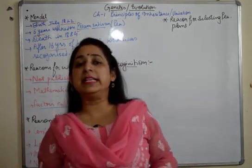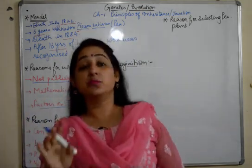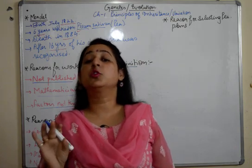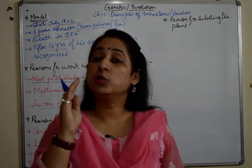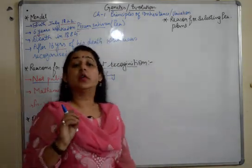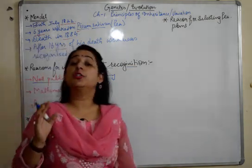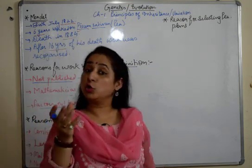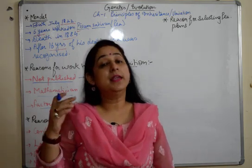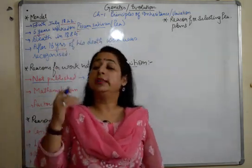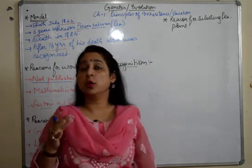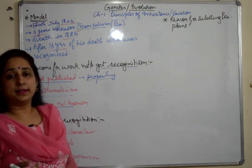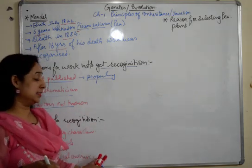Third, mathematical expressions: being a mathematician, he gave mathematical expressions for all his derivations and hypotheses. When he received results from a generation, he mathematically proved them through monohybrid and dihybrid crosses, and his three laws are all supported by mathematical derivations. Fourth, no linkage: fortunately, in all the crosses he made with pea plants, there was not a single case of linkage found, which was a positive factor for his recognition.